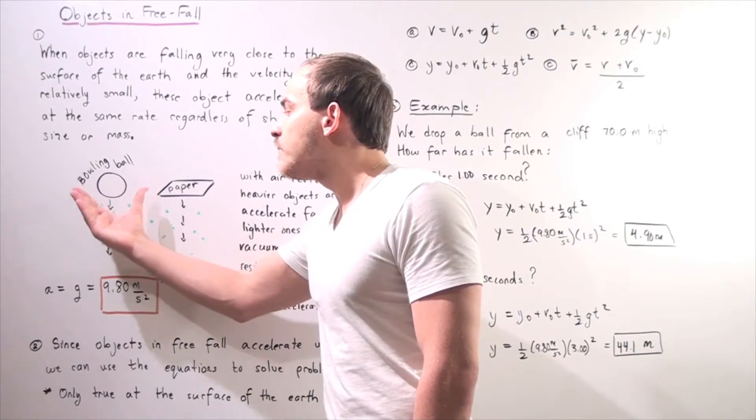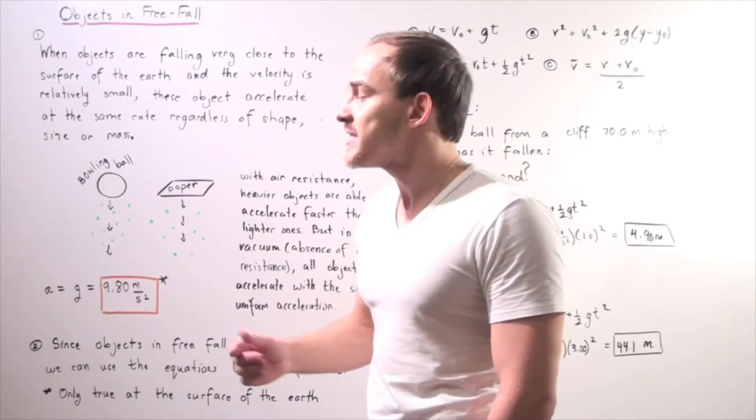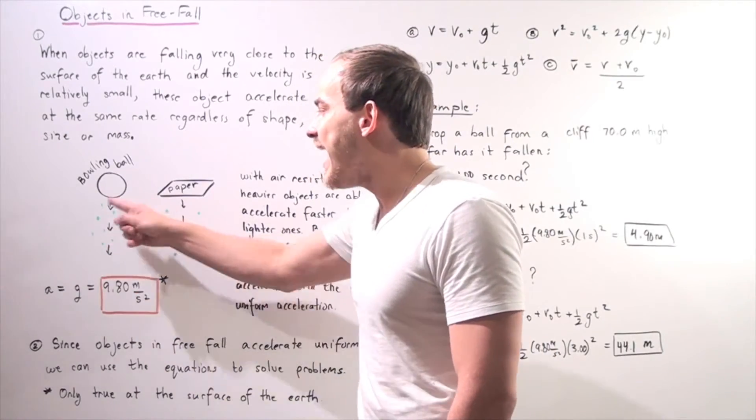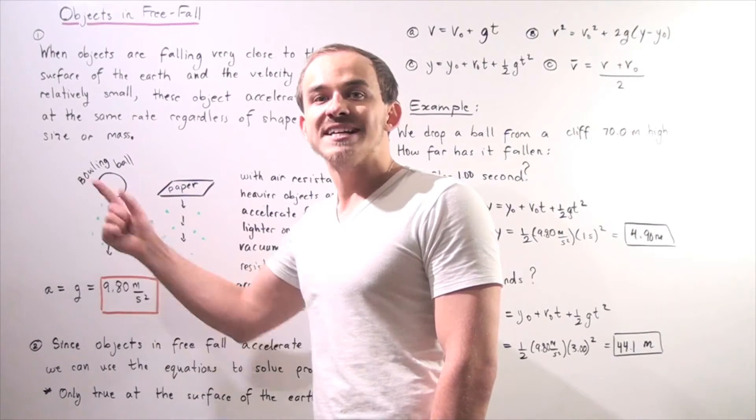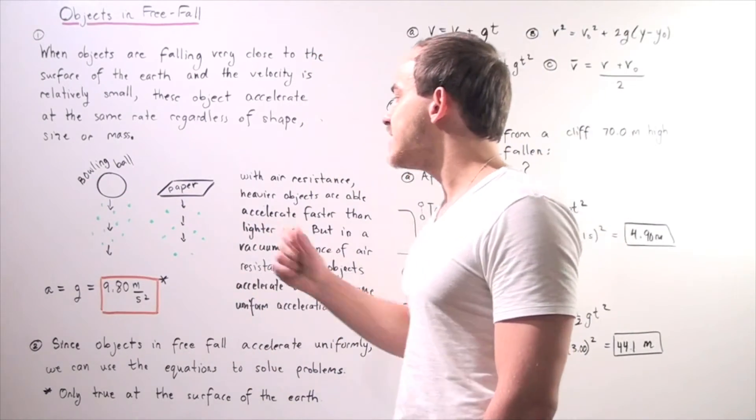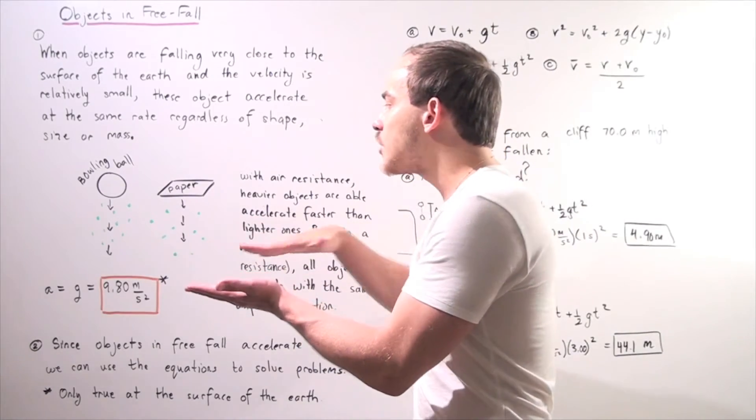In other words, this bowling ball will be able to fall easier. It will accelerate faster because these molecules in the air will not be able to resist this bowling ball as much as they will be able to resist this flat piece of paper that has a much larger surface.